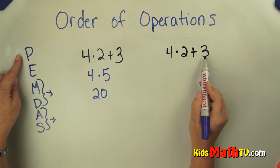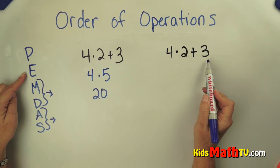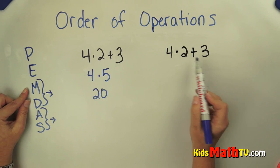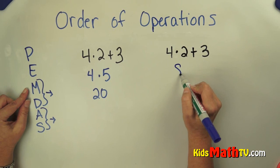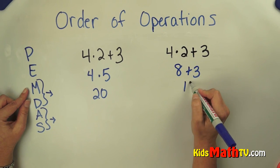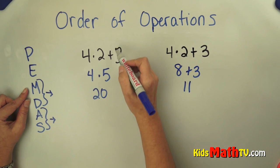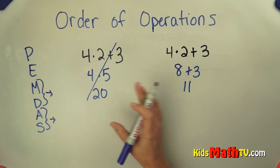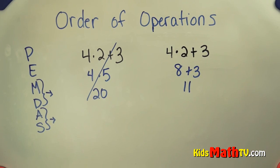I look for parentheses and there are none, so I can skip that. There are no exponents to evaluate. So now I'm going to multiply and divide from left to right: 4 times 2 is 8, added to 3, which is 11. 11 is the correct answer. This one is wrong because I did the wrong order of operations. This one is correct because I used the order of operations.